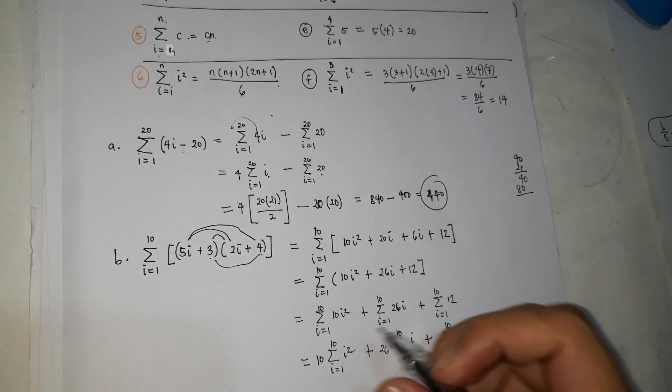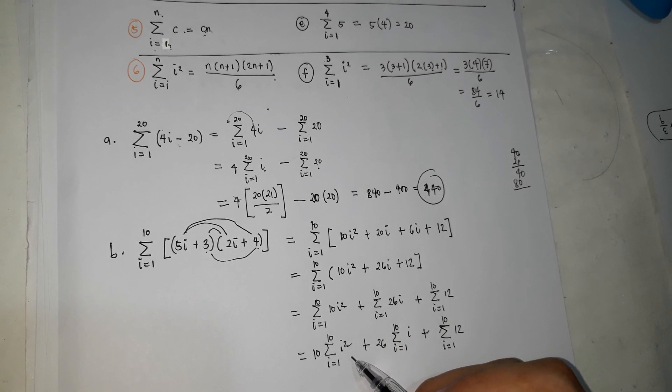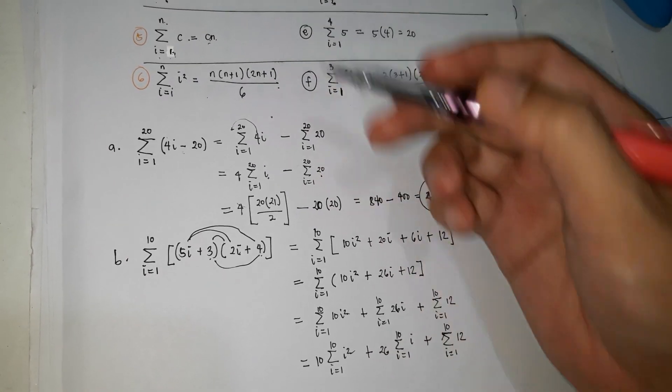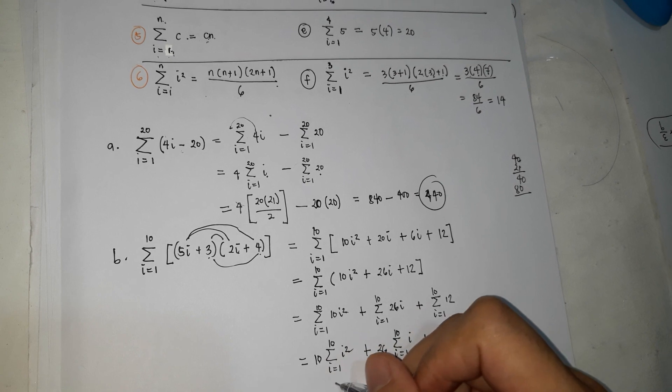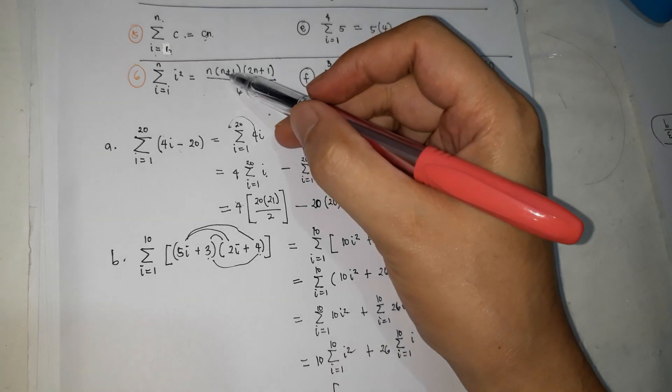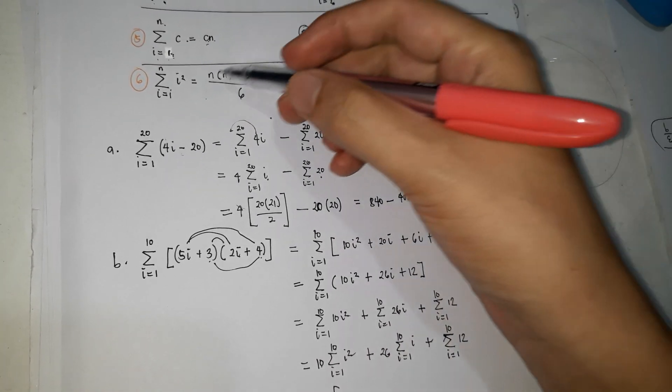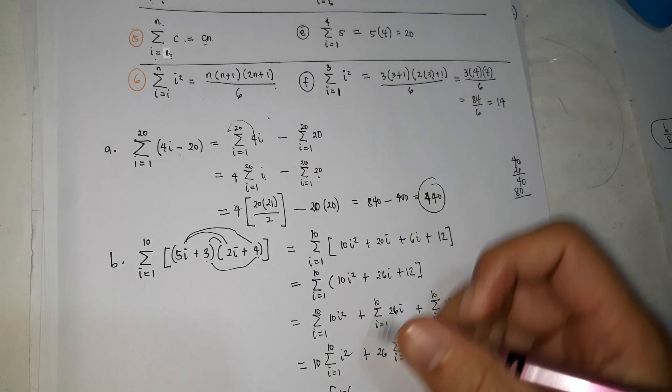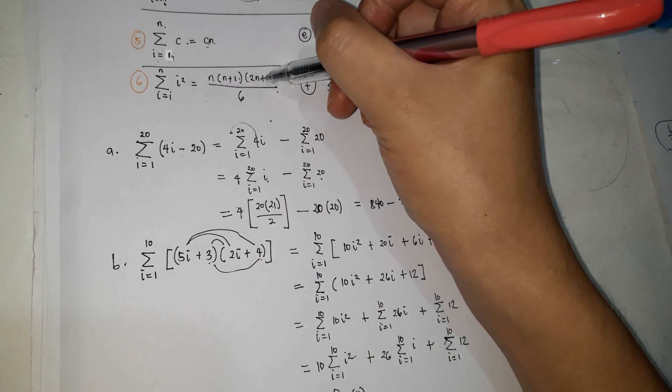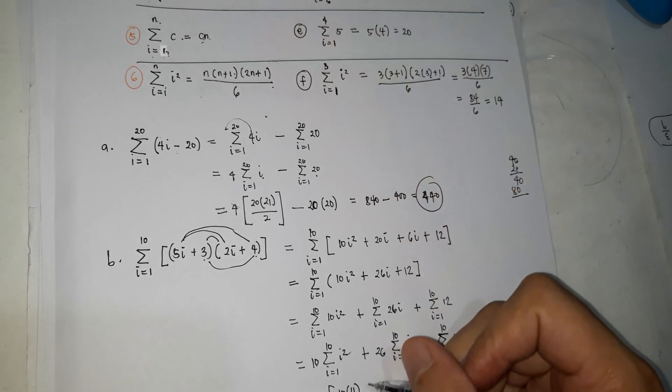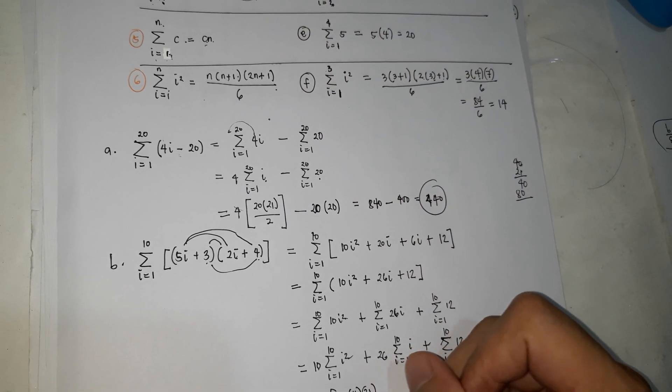So this one, as you notice, kapag may i squared, gandito ang gagamitin ng formula. Ito ang n, yung sa taas, 10. Kopyahin mo muna itong 10, lahat ng n, palitan mo ng 10. So 10, plus 10 plus 1, 11, plus 2 times 10, 20 plus 1, 21, over 6,